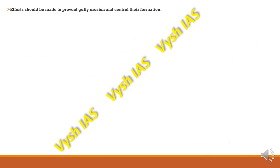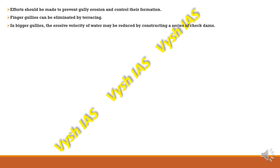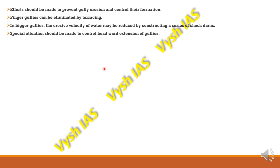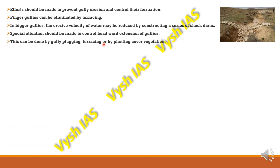Efforts should be made to prevent gully erosion and control their formation. Finger gullies can be eliminated by terracing and through construction of check dams. Check dams reduce the erosive velocity of water for bigger gullies. Special attention should be given to controlling the headward extension of gullies — the broader head region has more chances of spreading and deepening. Remedies include gully plugging, terracing, or planting cover vegetation.